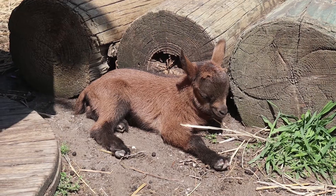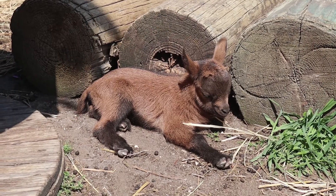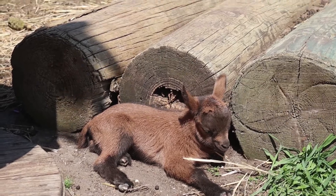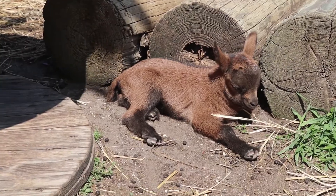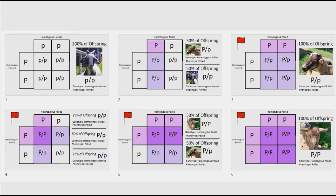In this video, we will be going over the genetics of polled goats, including six different Punnett squares related to the breeding of polled and horned goats.